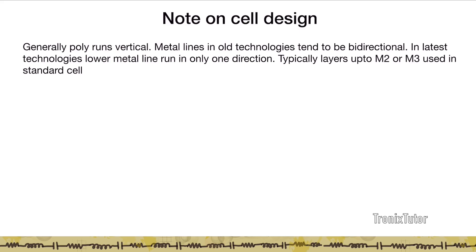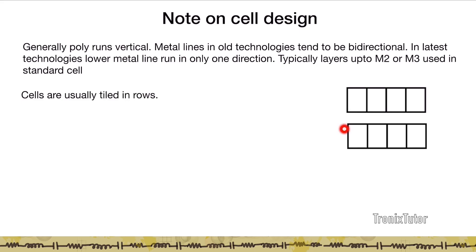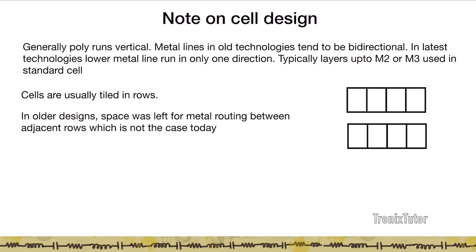Poly generally runs vertically, and metal lines in older technologies tend to be bidirectional. In today's technologies, metals are almost always unidirectional, and standard cells use up to metal two or three. Because cells are the same height, they are tiled in rows. Older designs left space between adjacent rows for routing metal lines, but today higher metal layers allow rows to be abutted together, saving silicon area.